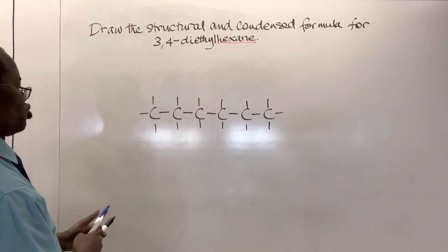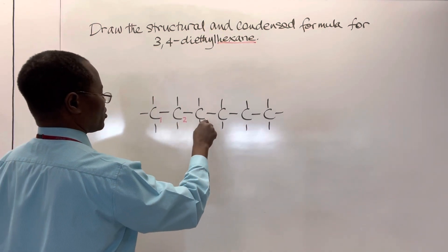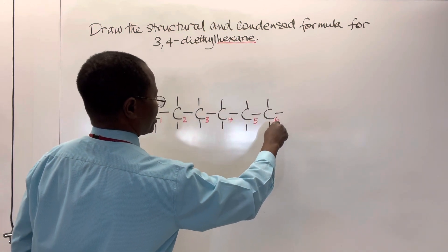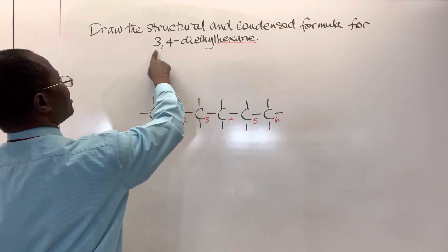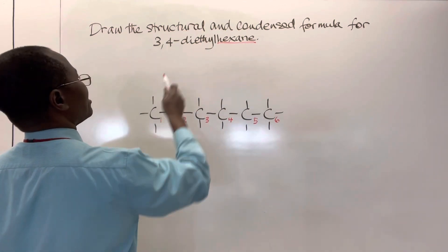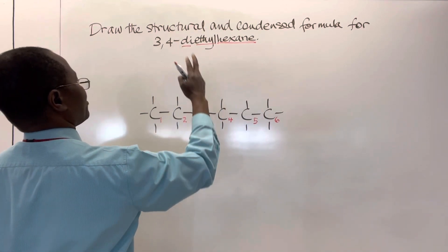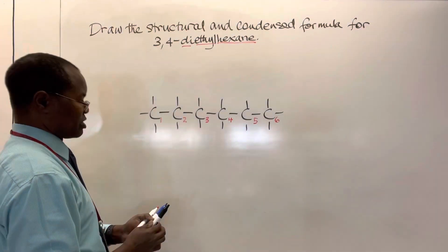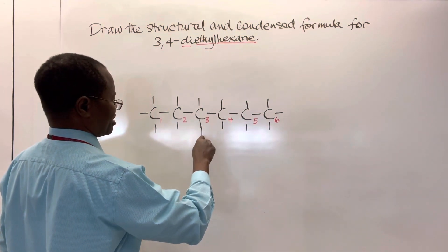The next thing we're going to do is number these carbons: one, two, three, four, five, six. Now we know that on carbon number three and carbon number four we have an ethyl group. 'Di' means we have two ethyl groups, and those two groups are on carbon number three and carbon number four.